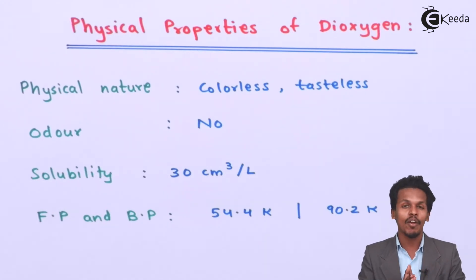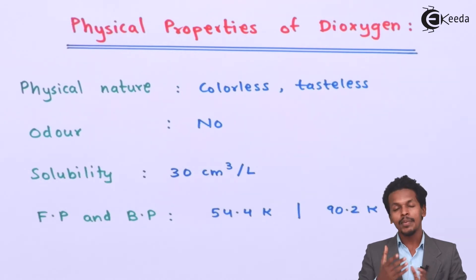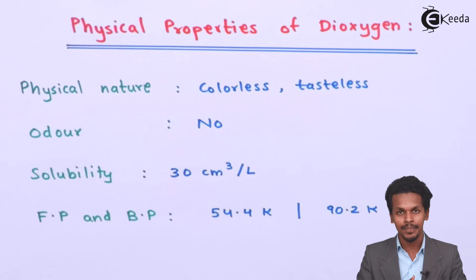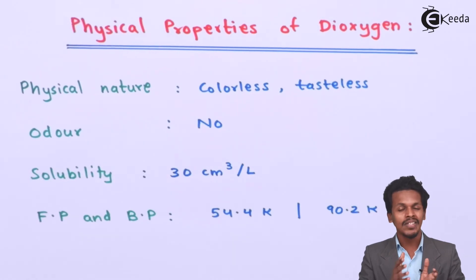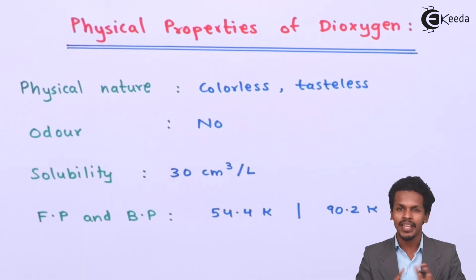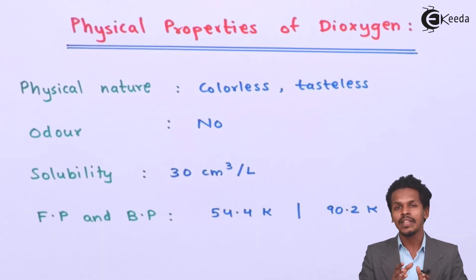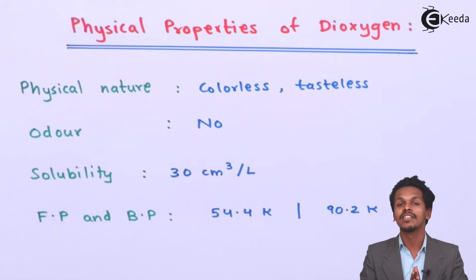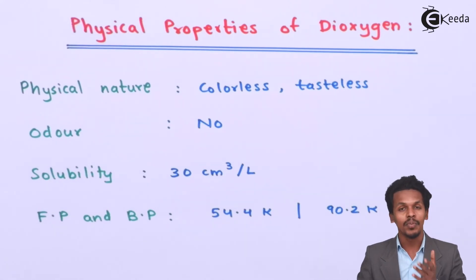Let me talk about the other property, that is paramagnetism. Oxygen has two unpaired electrons, making it paramagnetic. That's the reason that even though you have an even number of electrons, this molecule is considered to be paramagnetic in nature.